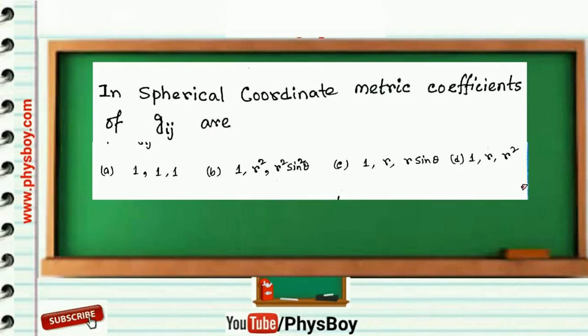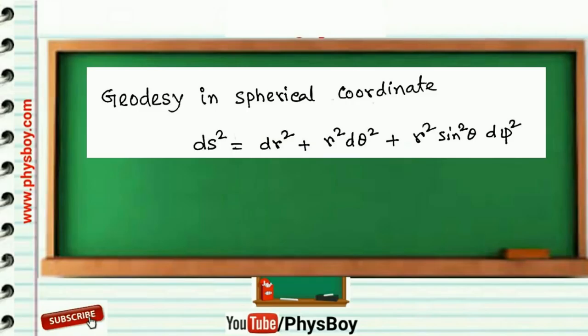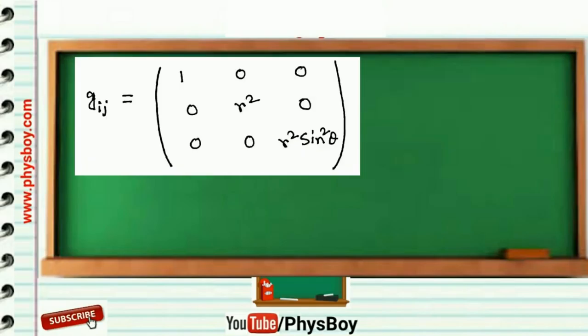In three-dimensional spherical coordinate system, geodesy ds square can be written as dr square plus r square d theta square plus r square sine square theta d phi square. So the matrix form of g_ij is like this.